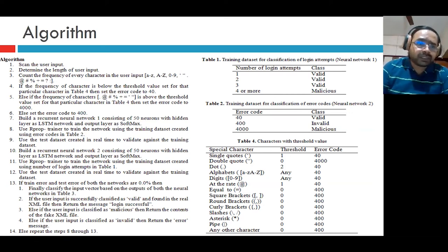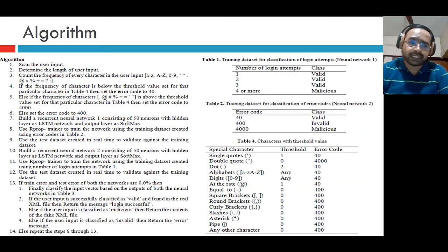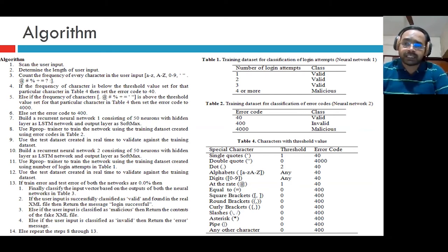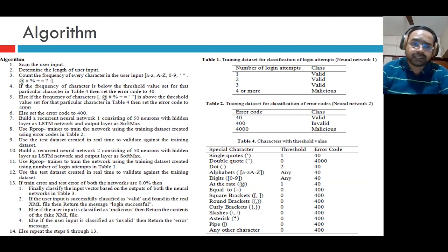If the frequency of a character is below the threshold value set for that character in Table 4, set the error code to 40. If the frequency is above the threshold value, set the error code to 4000. Otherwise, set the error code to 400. There are two training datasets — one for classification of login attempts and one for classification of error codes. Each is trained on a different neural network with 50 neurons, an LSTM hidden layer, and a softmax output layer. Both networks are trained using resilient propagation (Rprop) trainer.